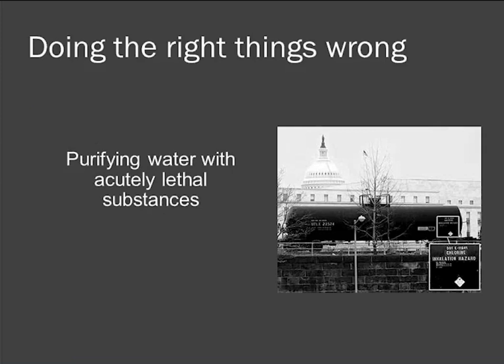The first example is purifying water. In the background of that picture you see the Capitol Building in Washington, D.C., and that is a tanker car of chlorine that goes by the Capitol Building three times a week to go to the Blue Plains drinking water treatment plant to provide drinking water to the nation's capital. Just think about the resources that go into ensuring security and safety of that tanker car going through this very populated and important location. We do need to provide clean, safe drinking water — but is there a greener way to do it?